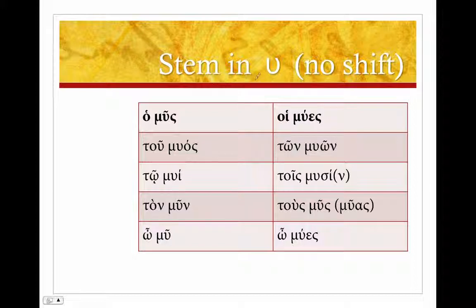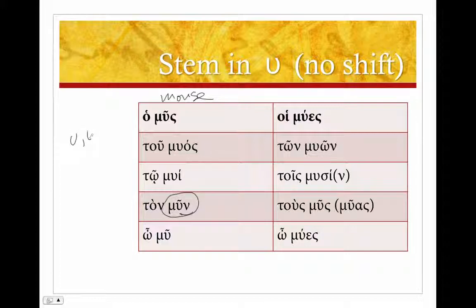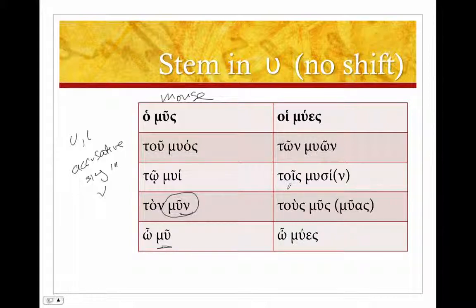There are also stems in upsilon where there is NO shift to epsilon — you'll note this by checking the genitive. This will decline as you might expect, except for the accusative singular. For example, 'mus' (mouse) — see also 'ichthus' (fish) following the same pattern. So: 'mus, muos, mui, mun' — watch that — then the vocative is just the stem 'mu'. Plural: 'hoi mues', 'ton muon', 'tois musi', 'tous mus' or 'muas'. You'll also find the uncontracted form 'muas'. Vocative 'mues', same as the nominative.